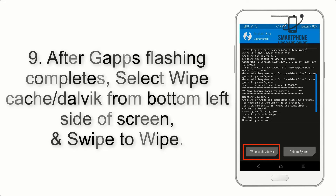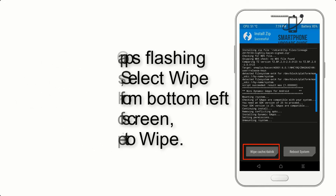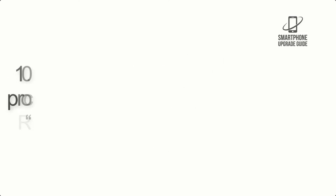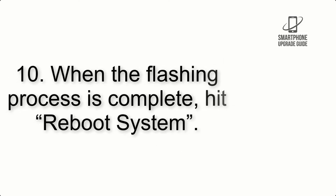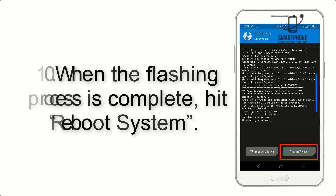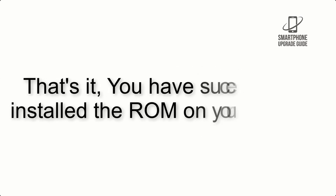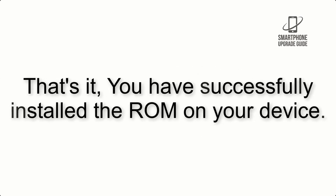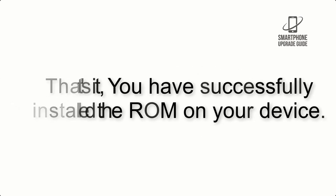Step 9: After GApps flashing completes, select Wipe Cache and Dalvik from the bottom left side of the screen and swipe to wipe. Step 10: When the flashing process is complete, hit Reboot System. That's it — you have successfully installed the ROM on your device.